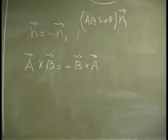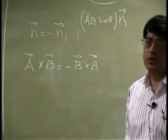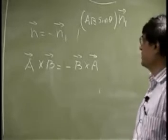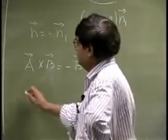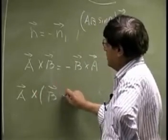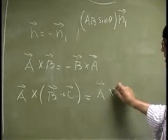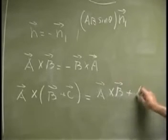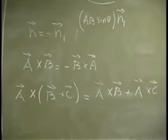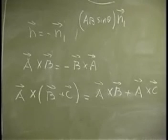So A cross B equals negative B cross A. They have the same magnitude but are in opposite directions, and you account for that by placing a negative sign. You also have the distributive property: A cross (B plus C) equals A cross B plus A cross C. That means you can either find the cross products separately and then add them, or add the vectors first and then compute the cross product.